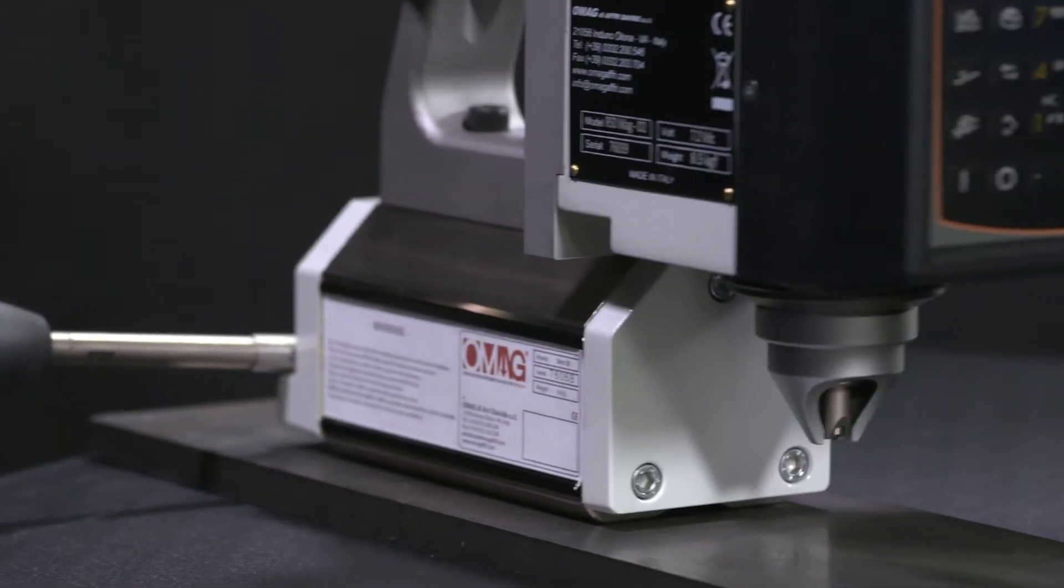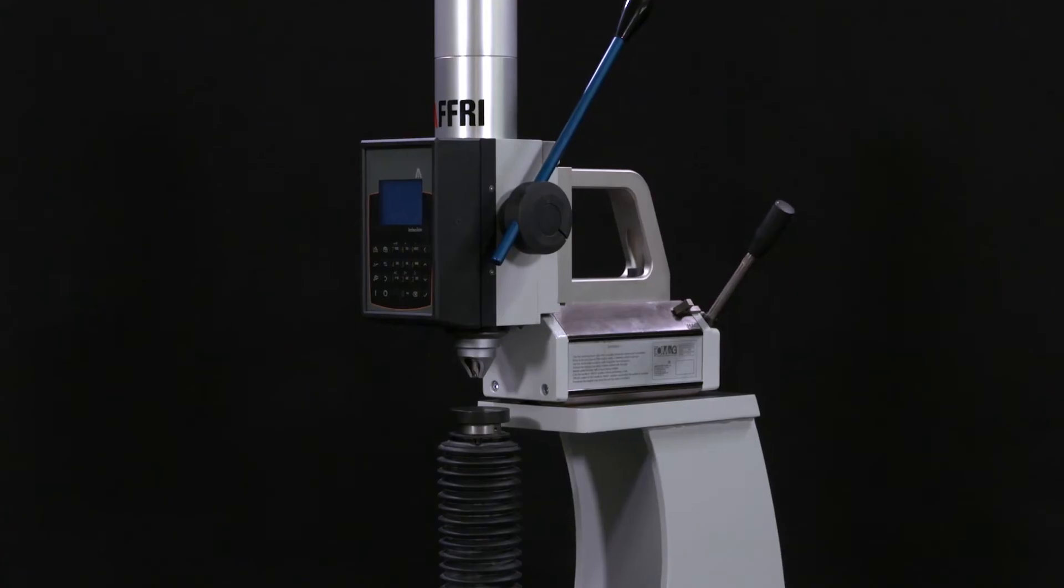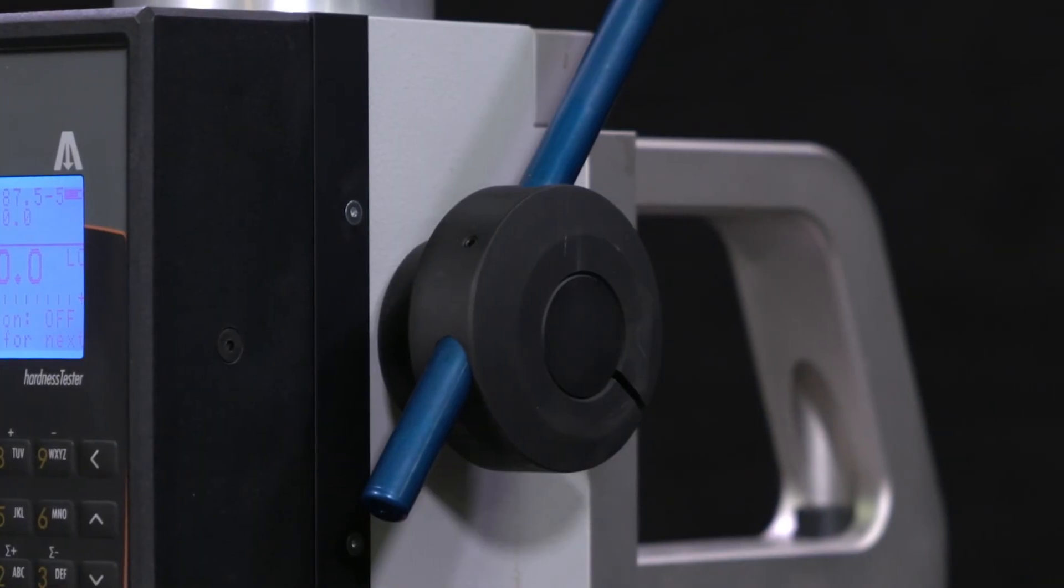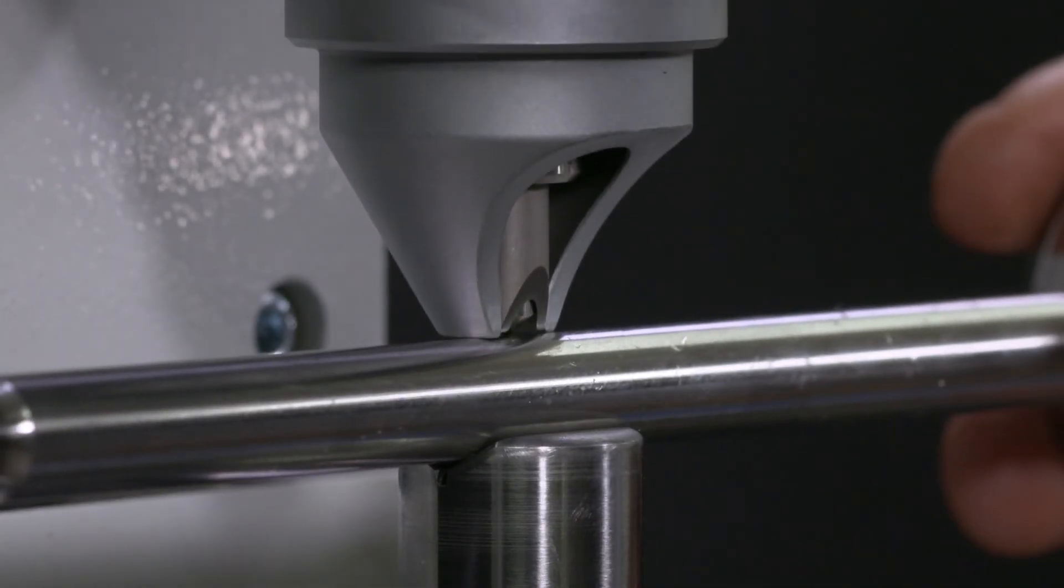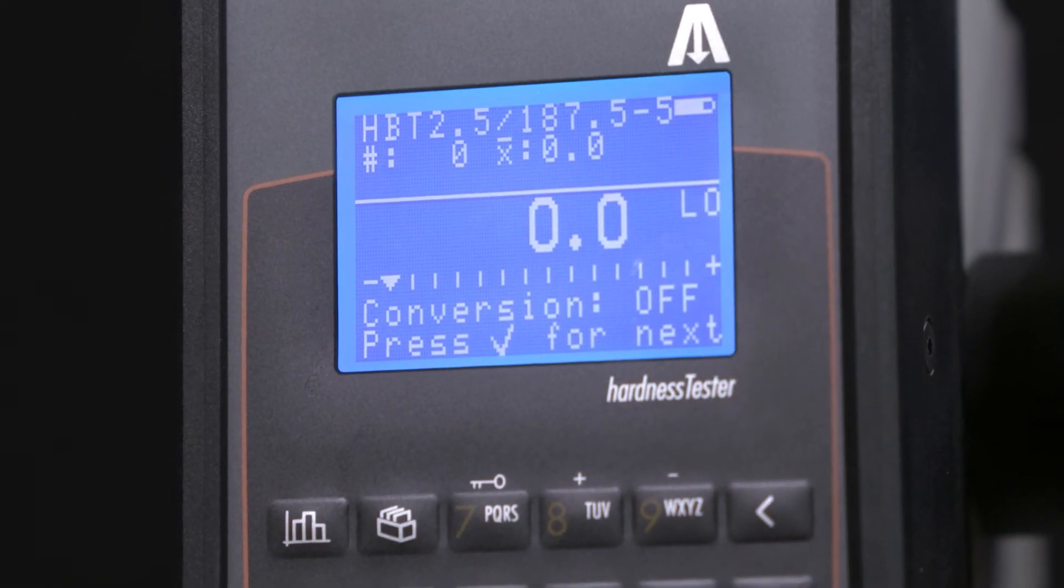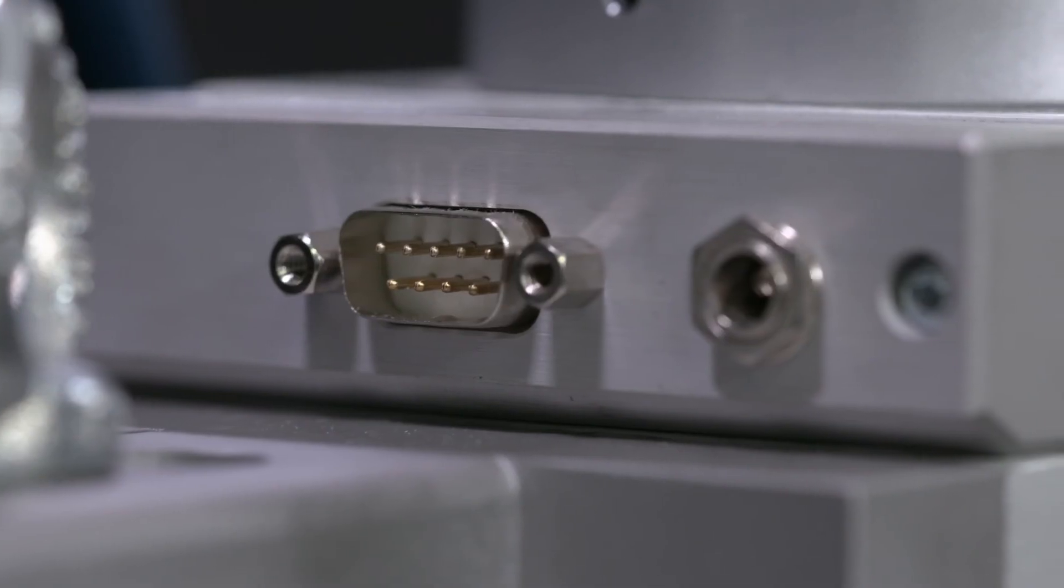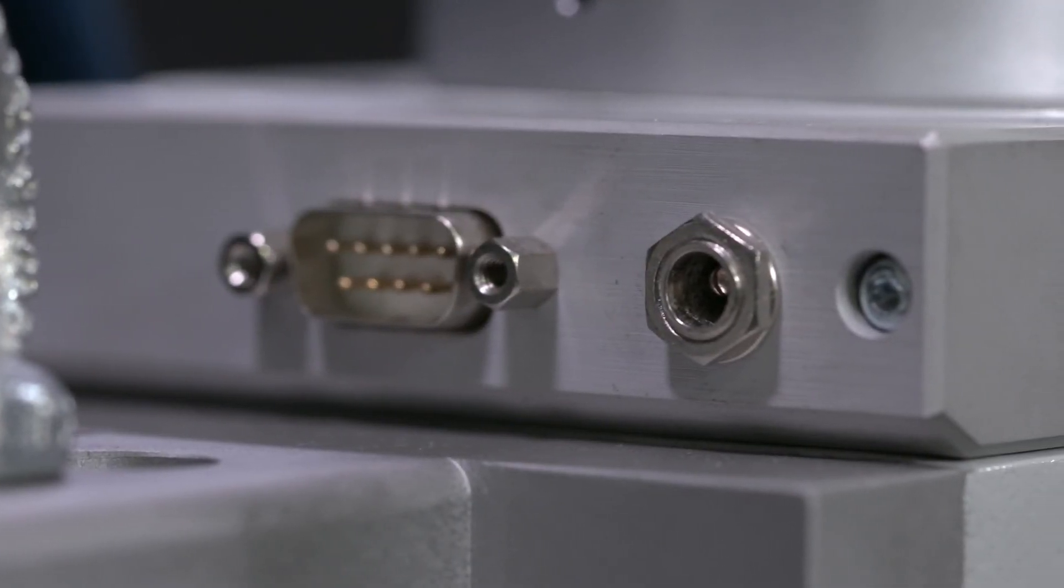The hardness tester can be configured with different types of support, magnetic and non-magnetic, to ensure perfect adherence to every piece, also enabling Brinell HB30 hardness tests to be carried out. The AFRI-RSD-MAG has RS232 and USB ports to export data.